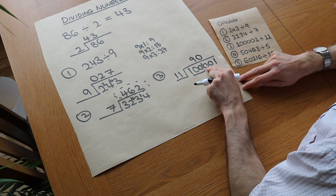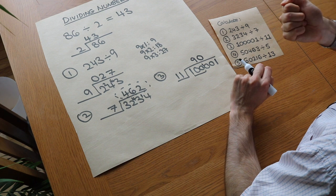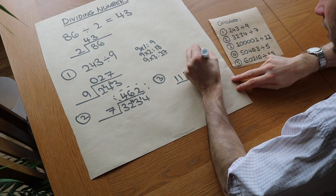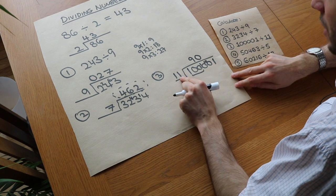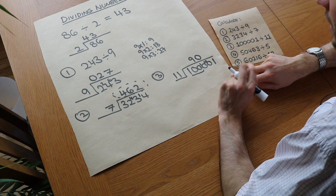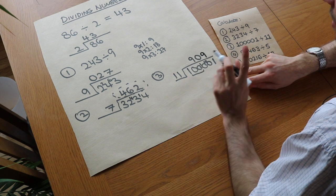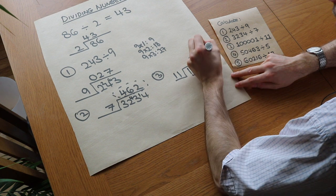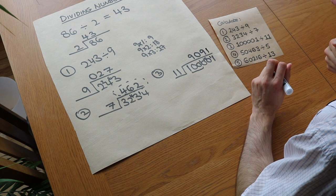The remainder when 11 doesn't go into 10 is 10 itself — we still have all 10 sweets in hand. So we put the remainder of 10 onto the next digit, giving us 11 into 100 again. It goes in 9 times — 9×11=99 — with 1 sweet left over. Then 11 into 11 goes exactly once. So the answer is 9,091.